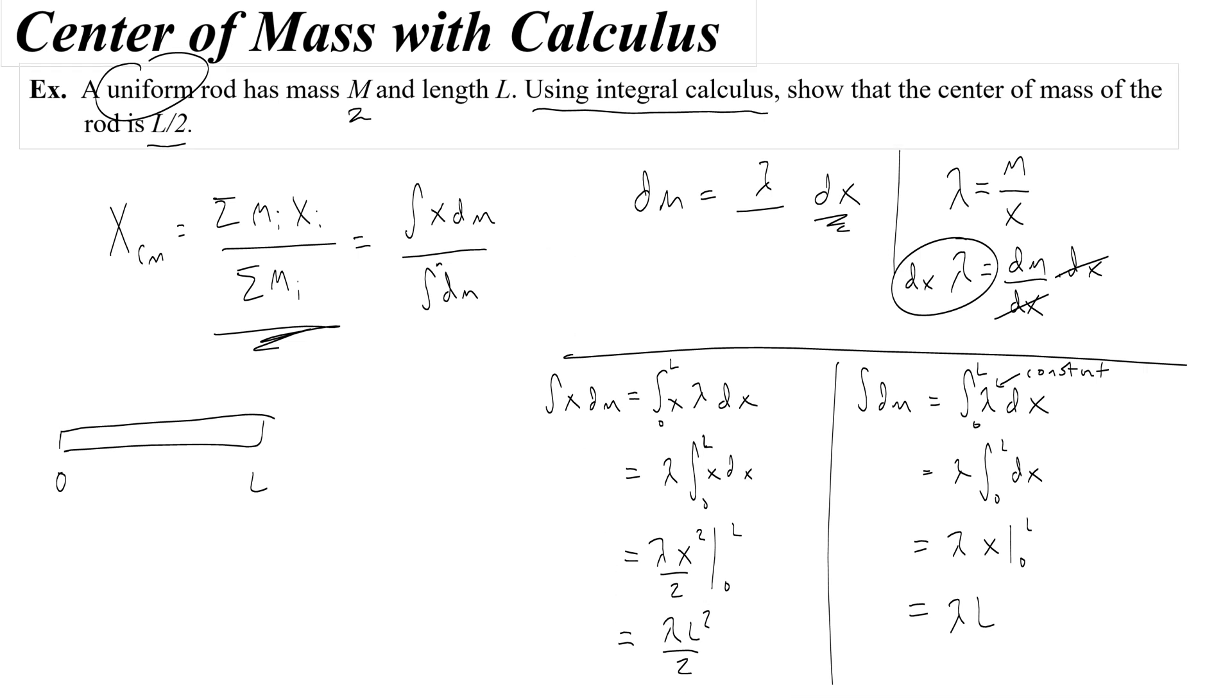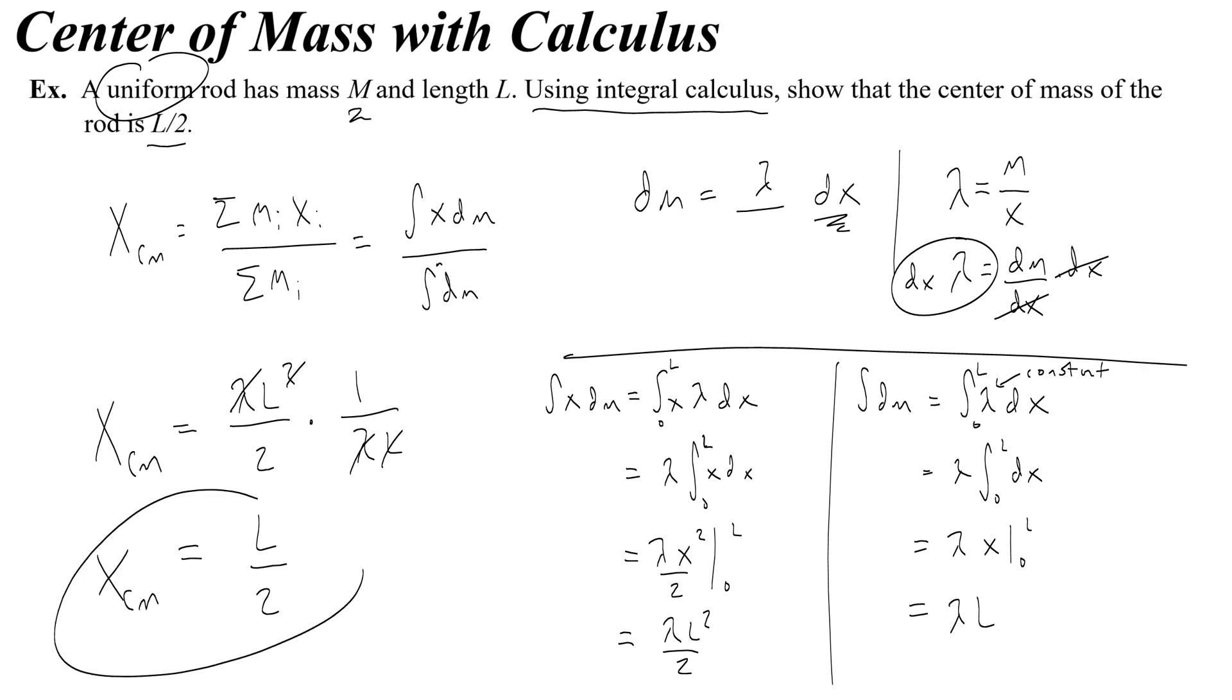Okay, now all that's left to do is to put those two things in the top and the bottom of our fraction. So the center of mass is going to be lambda l squared over 2, right? That's the top part. And then I'm going to divide by this bottom part. But since it's a fraction, I'm just going to go ahead and multiply by 1 over lambda l. Hopefully that made sense to you. And now I can see that the lambdas cancel, one of the l's cancel, and I get l over 2 as my center of mass.